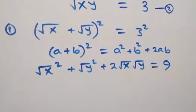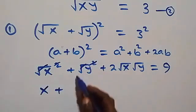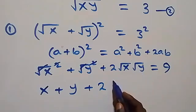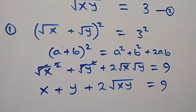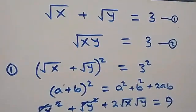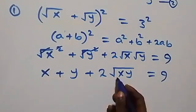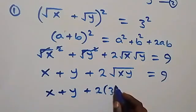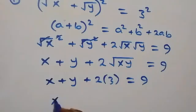The square cancels the square root, so we have x + y + 2√(xy) = 9. From equation two, √(xy) = 3, so substituting that in, we have x + y + 2 times 3 equals 9.